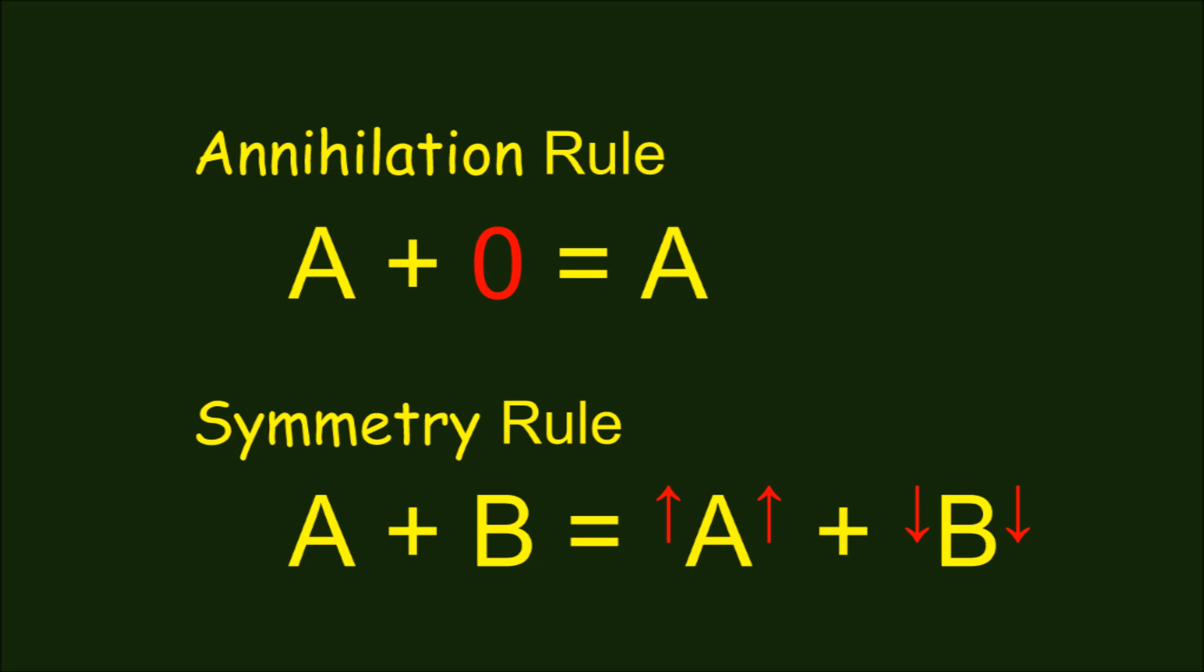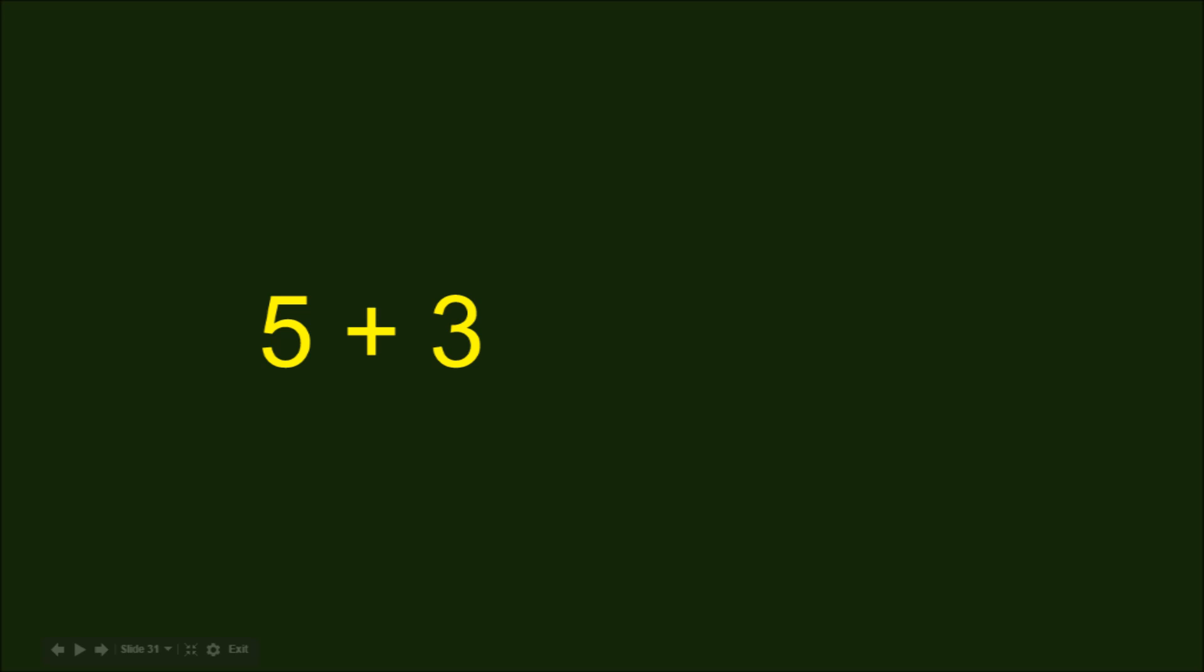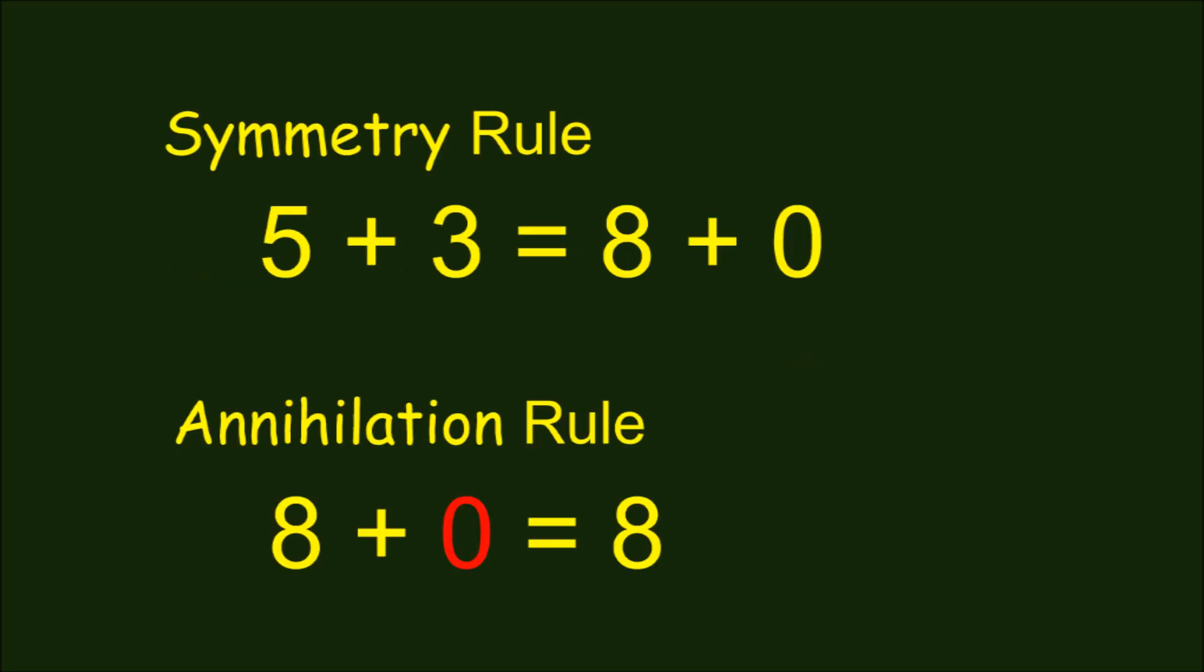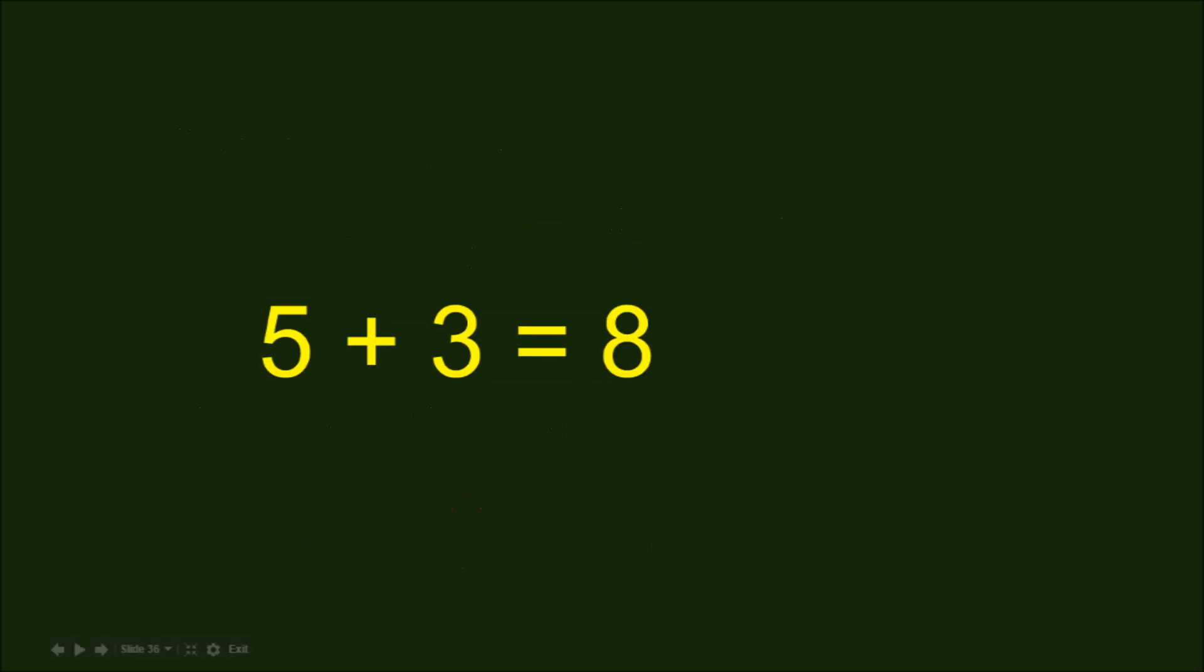Let's say I want to add 5 plus 3. By symmetry, this is the same as 6 plus 2. Also, this is the same as 7 plus 1, which is the same as 8 plus 0. And with that plus 0, I can use the annihilation rule to leave just the 8 by itself. So 5 plus 3 equals 8.